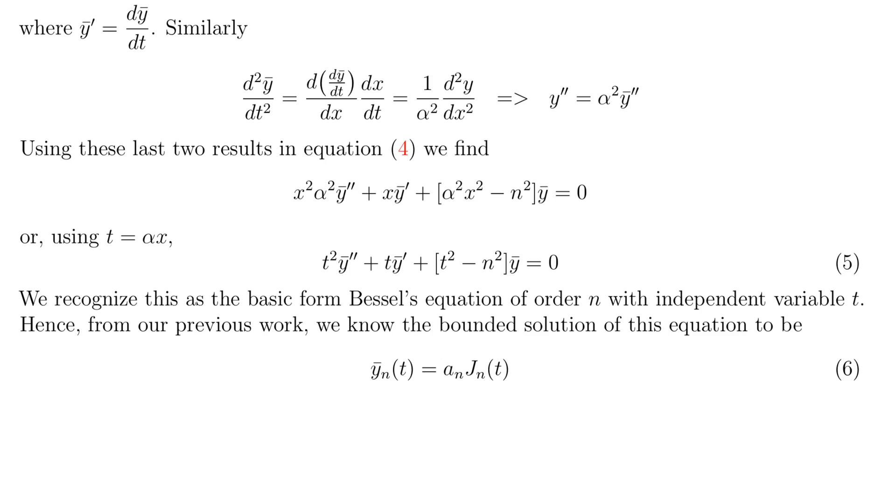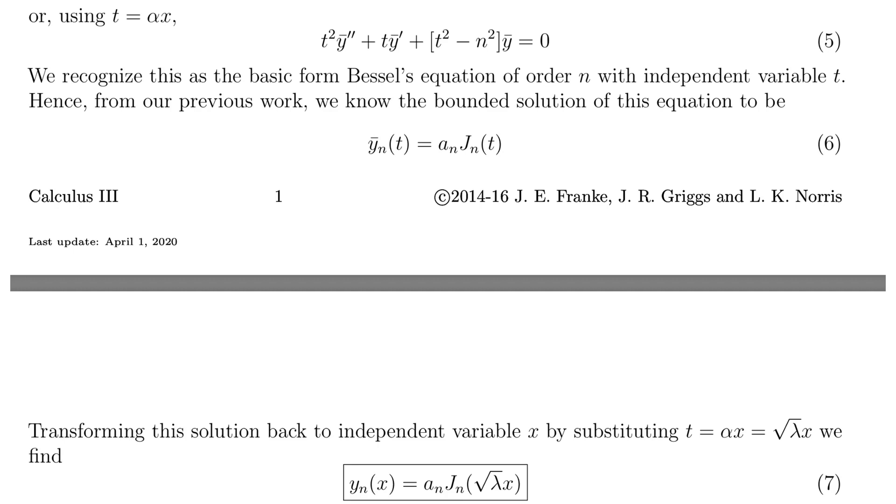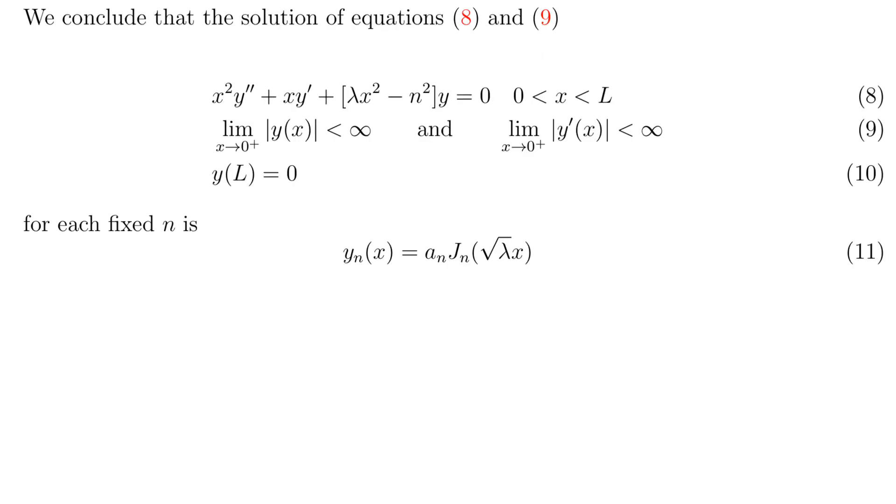We know from our previous work that the general solution of equation 5, the bounded general solution of equation 5, is given in equation 6, a constant multiple of j sub n of t. Transforming the solution back to the independent variable x, by substituting t equals the square root of lambda x, we get the solution given in equation 7. This is the bounded general solution of our eigenvalue problem.